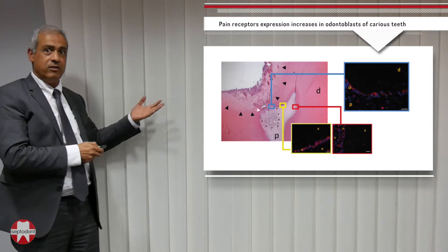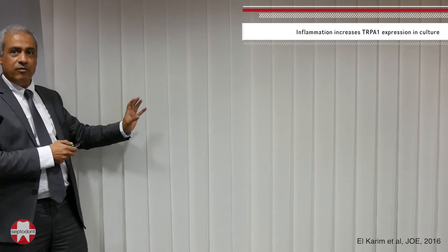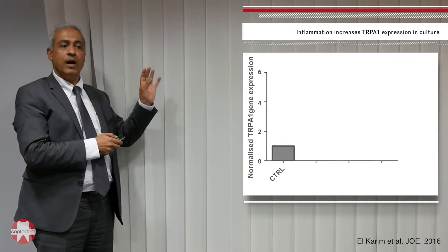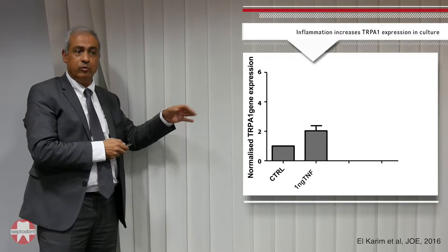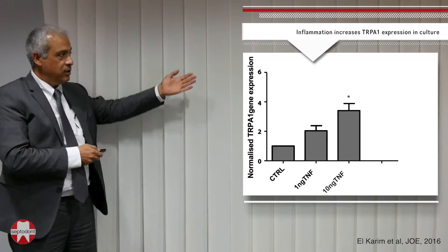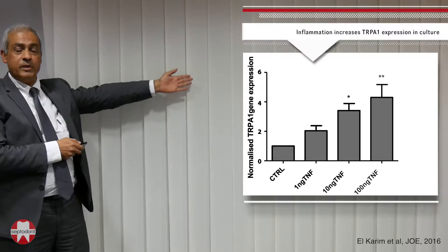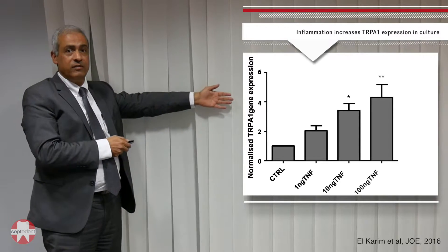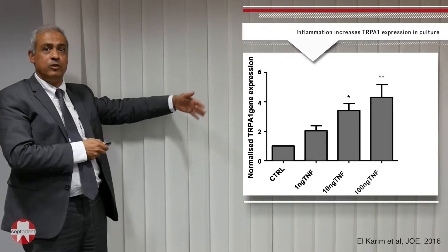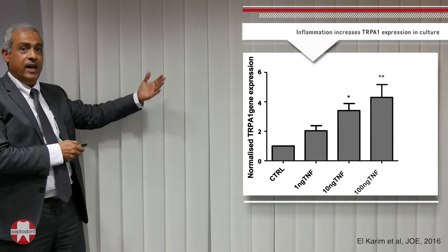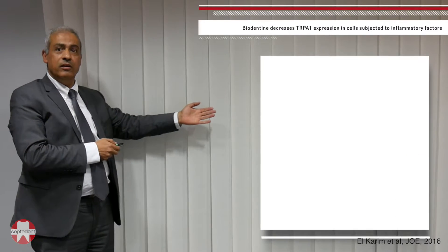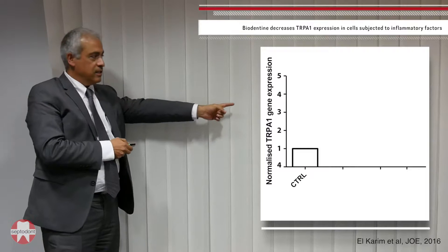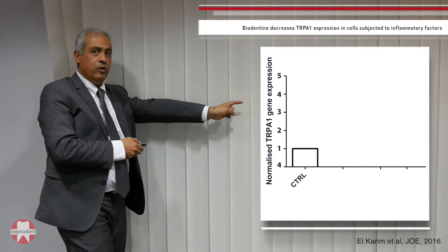Can we reproduce this in vitro? The answer is yes. We took fibroblasts and applied a pro-inflammatory factor, TNF-alpha. There is a clear dose-response effect: as you add more TNF-alpha, there is a higher increase in TRP receptor expression.